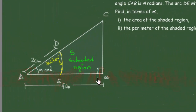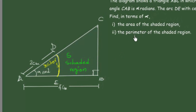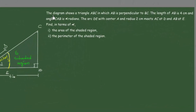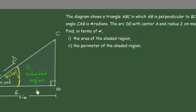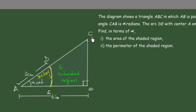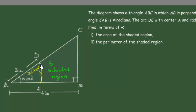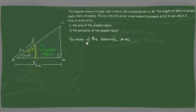In this video we will solve a problem with a triangle which has a sector and a shaded region. We want to find the area and the perimeter of the shaded region. The problem shows a triangle ABC in which AB is perpendicular to BC, the length of AB is 4 centimeters, and angle CAB is alpha radians. The arc DA has center A and radius 2 centimeters, meets AC at D and AB at E. We want to find, in terms of alpha, the area and perimeter of the shaded region.